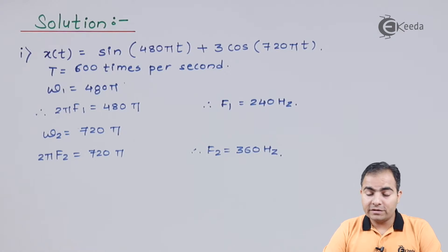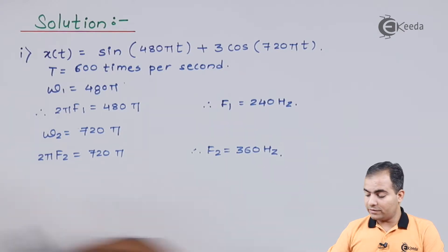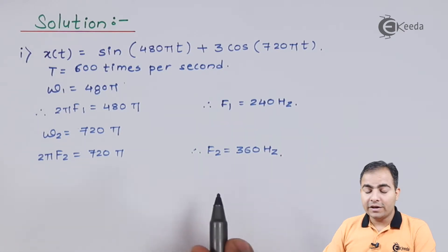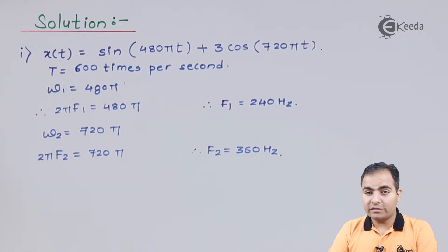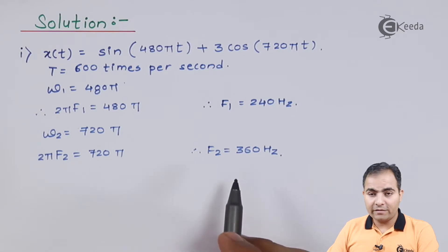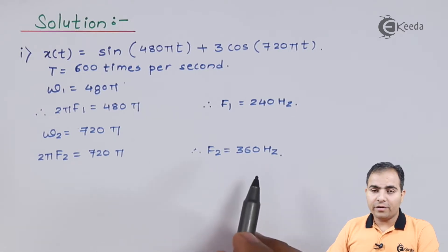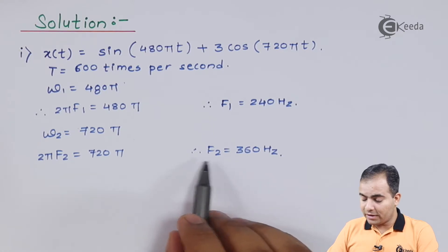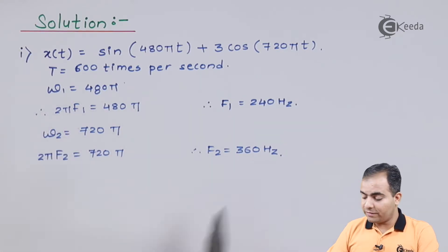Now out of these two frequencies, which one is maximum? Of course the answer is 360. Because if we want to avoid aliasing or foldover distortion, we should always give priority to the highest frequency. So for x(t), my maximum frequency is 360. The reason I am choosing 360 is because I want to avoid aliasing error. If I choose the maximum frequency, we can avoid aliasing or foldover distortion.